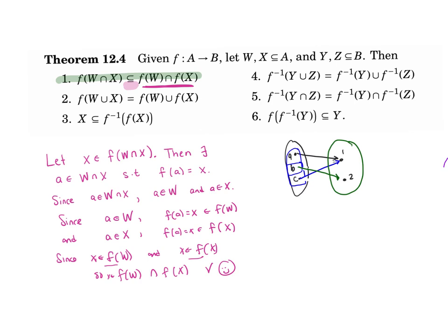So if x is in the intersection, it's in each of them. So it has something in each of them that gets mapped to it. So it seems like that would be fine. But it turns out we don't actually get equality here.